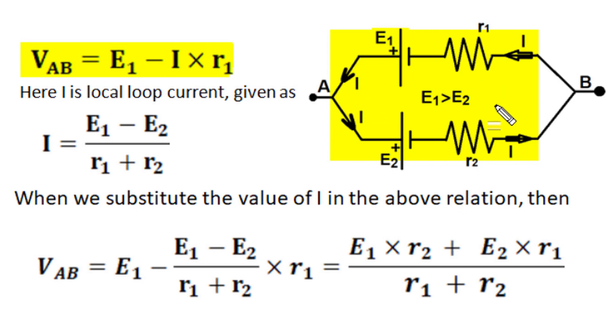When we substitute the value of current in this expression, our effective EMF or open circuited terminal voltage across AB is E1 minus I times R1. When we take LCM R1 plus R2, we get E1 times R1 positive.